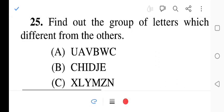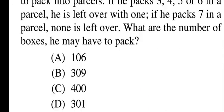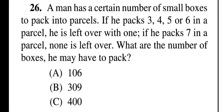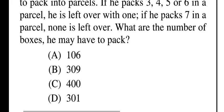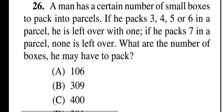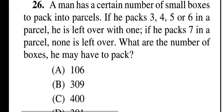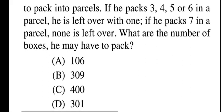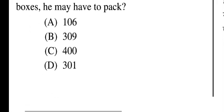Question twenty-six: a man has a certain number of small boxes to pack into parcels. If he packs 3, 4, 5, or 6 in a parcel, one is left over. If he packs 7, none is left over. How many boxes might he have? Options: 106, 309, 400, 301. Question twenty-six, option D is correct: 301.